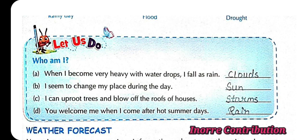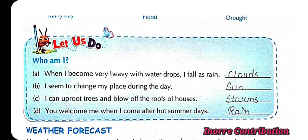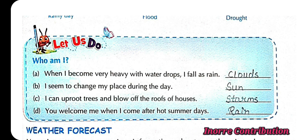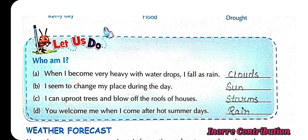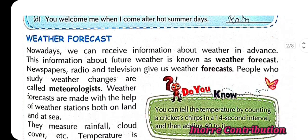Who am I? A. When I become very heavy with water drops, I fall as rain — clouds. B. I seem to change my place during the day — sun. C. I can uproot trees and blow off the roofs of the houses — storm. D. You welcome me when I come after hot summer days — rain.